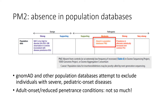However, individuals with adult onset conditions, many of which demonstrate reduced penetrance in a genetic predisposition context, are not excluded. It would be nearly impossible to recruit a cohort of older adult individuals completely negative for phenotypes related to cancer, heart disease, or neurological disorders, many of which have a genetic component.